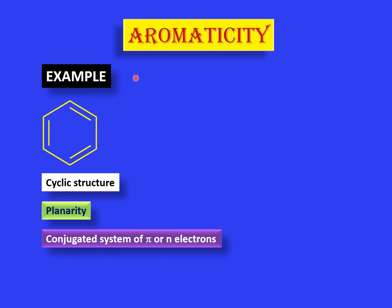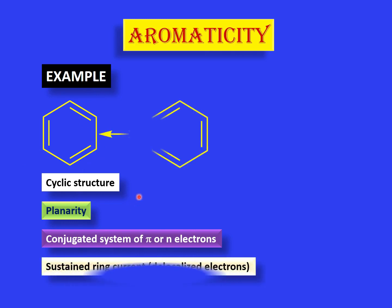Does it have a conjugated system of pi or non-bonding electrons? There are no non-bonding electrons here, only pi electrons. When we have alternating double and single bonds in the structure, the system is conjugated — so yes. Does it have a sustained ring current, meaning are the conjugated electrons delocalized? Yes. We can show benzene in two Kekulé structures where the pi electrons have shifted positions, demonstrating delocalization. When electrons move, current is produced — so it does have a sustained ring current.